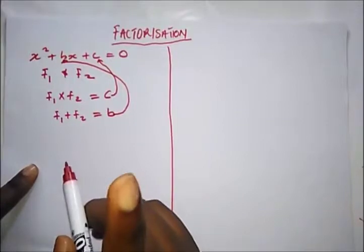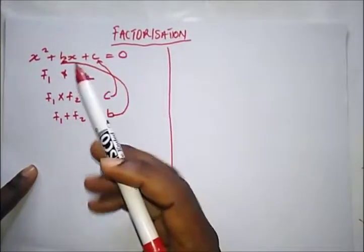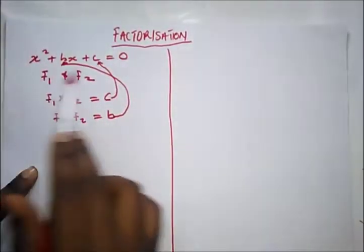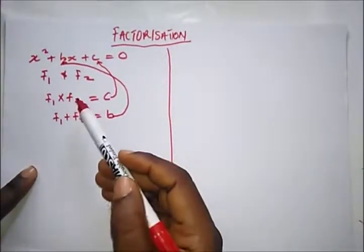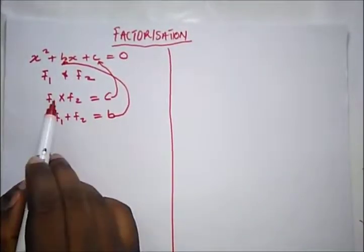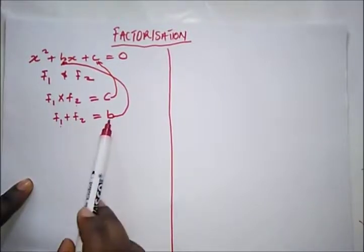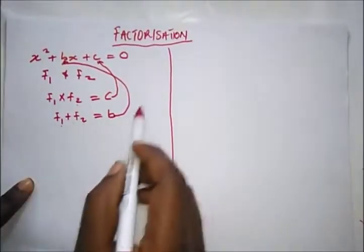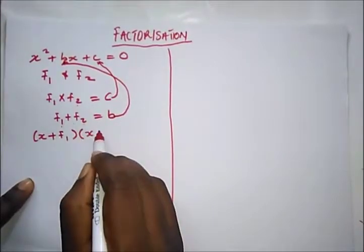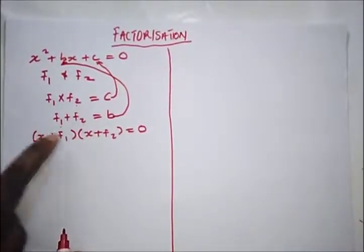Factorization is a very key topic in maths because many other topics — logarithms, indices, and several others — often boil down to a quadratic equation where you need to find values of x. The complete solution takes the form (x + f1)(x + f2) = 0, where we finally get our values of x.